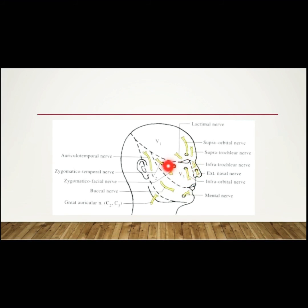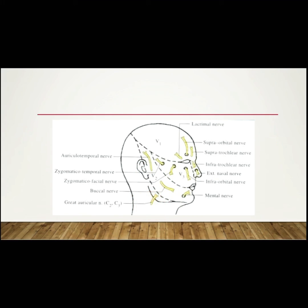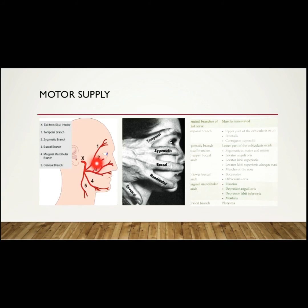The middle one-third is supplied by the maxillary division of the trigeminal nerve via three branches — namely the infraorbital, zygomaticofacial, and zygomaticotemporal nerves. The lower one-third part of the face is supplied by the mandibular division of the trigeminal nerve via three branches — the mental, buccal, and auriculotemporal nerves. The lowest part of the face is supplied via the great auricular nerve.